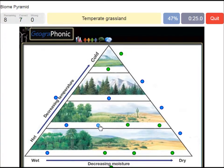A temperate grassland, decreasing temperature, rainforest, taiga.